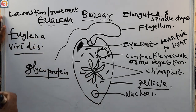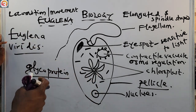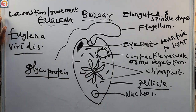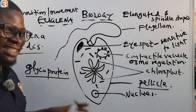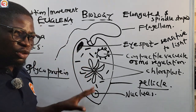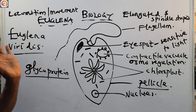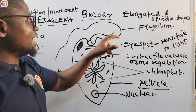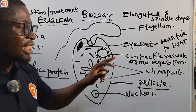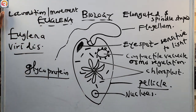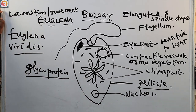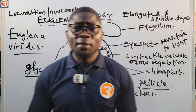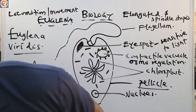To summarize: plant-like characteristics are — chloroplast for autotrophic nutrition, storage of carbohydrates as starch, and definite shape. Animal-like characteristics are — eye spot sensitive to light, flagellum for movement, contractile vacuole for osmoregulation, and a membrane made of glycoprotein instead of a cellulose cell wall. Now let's go to the O3 Schools Jump app and answer a few questions about Euglena.